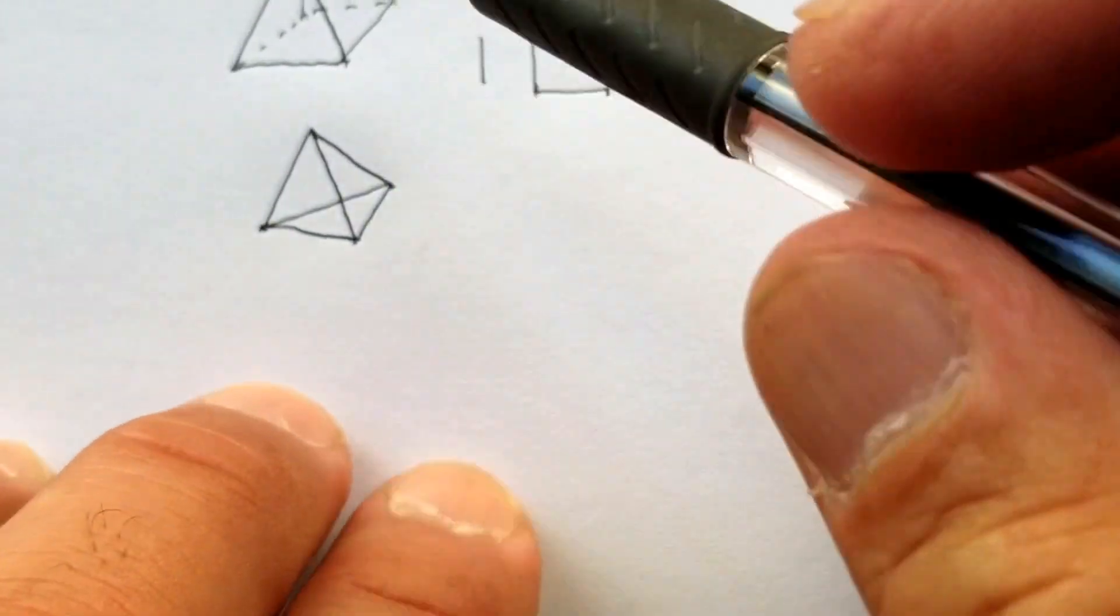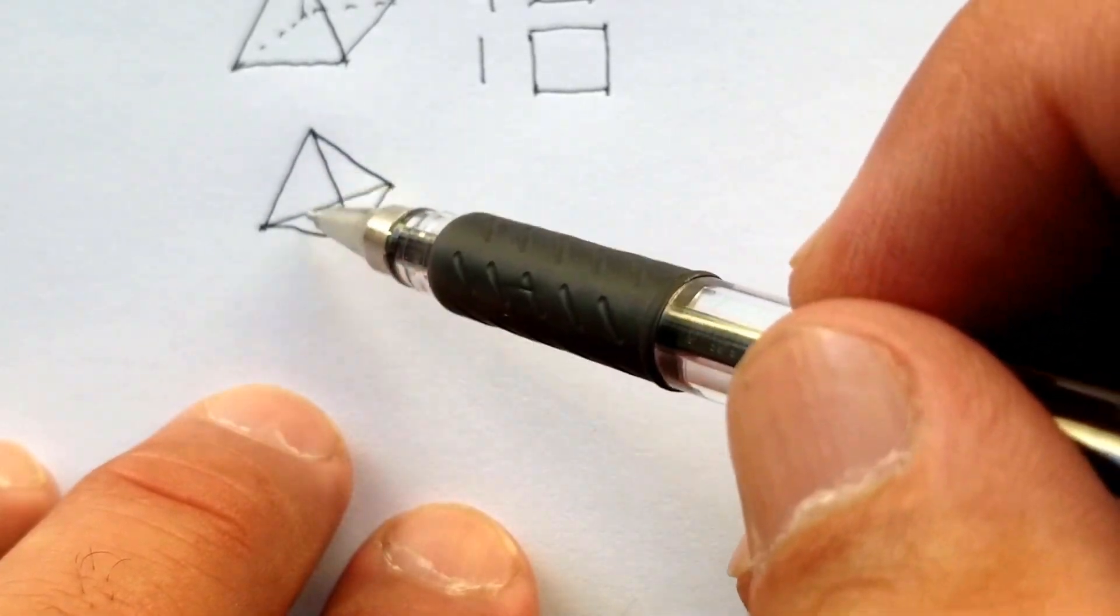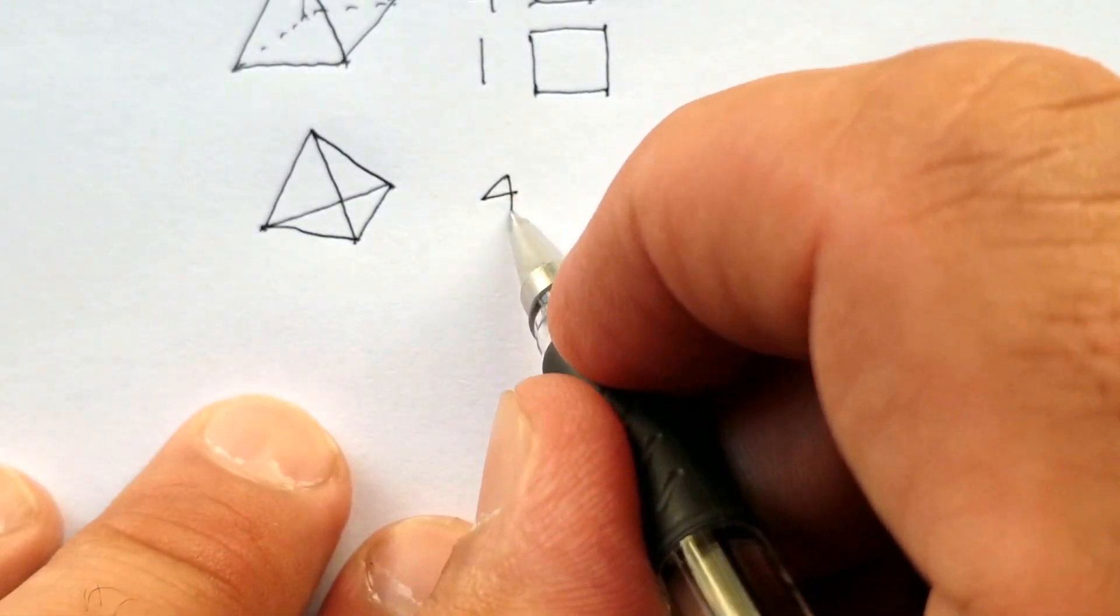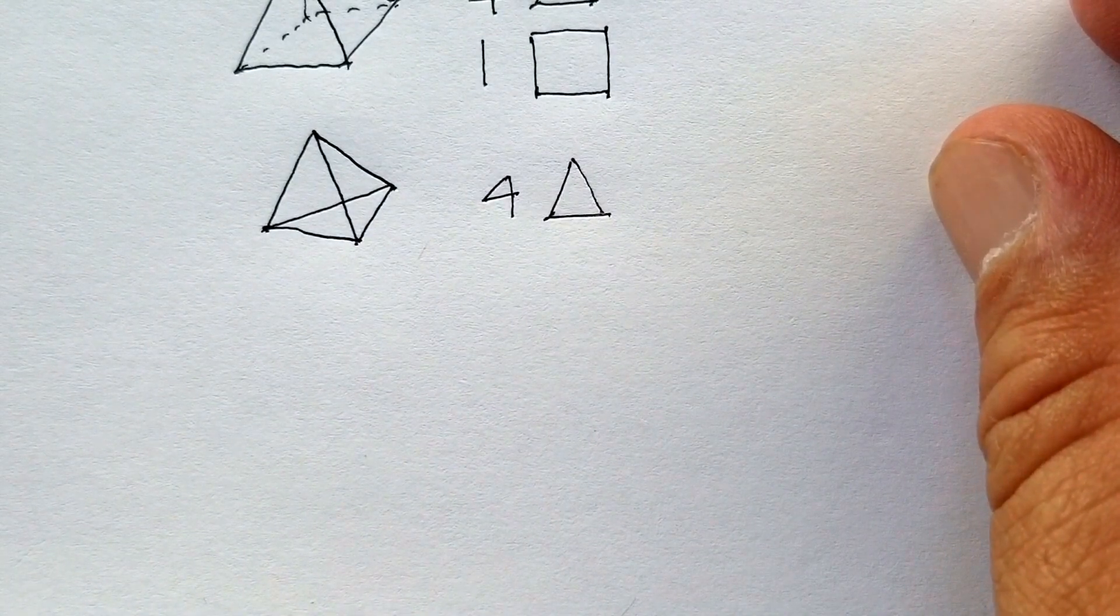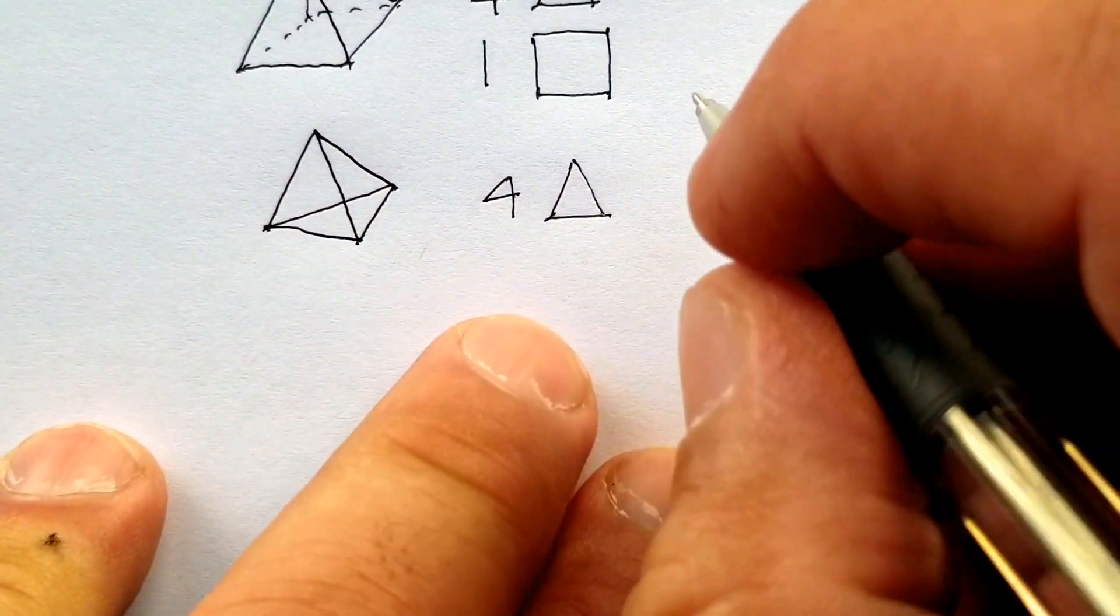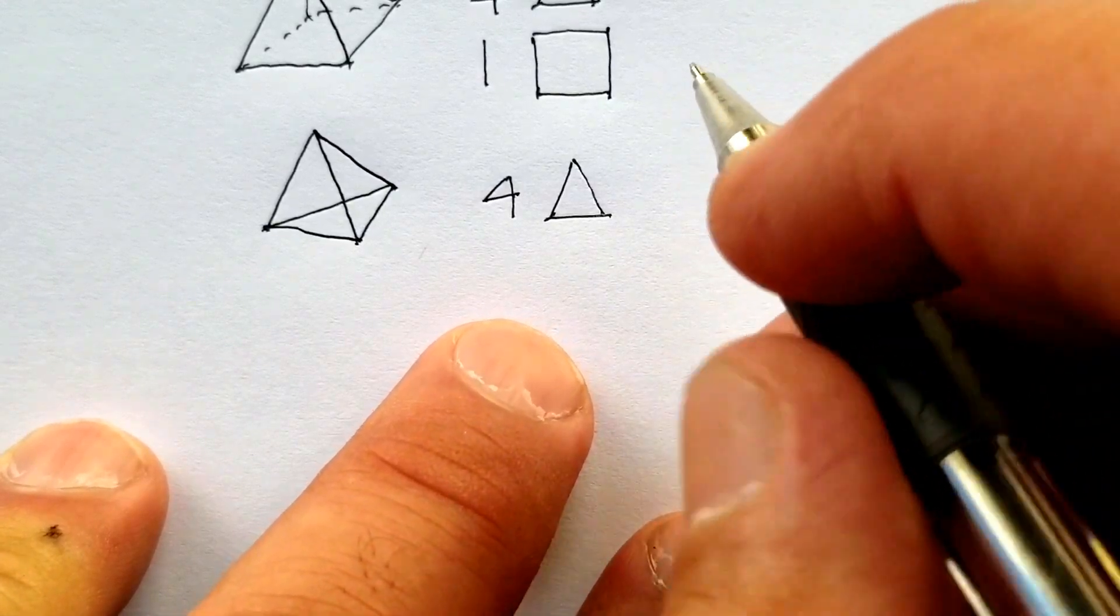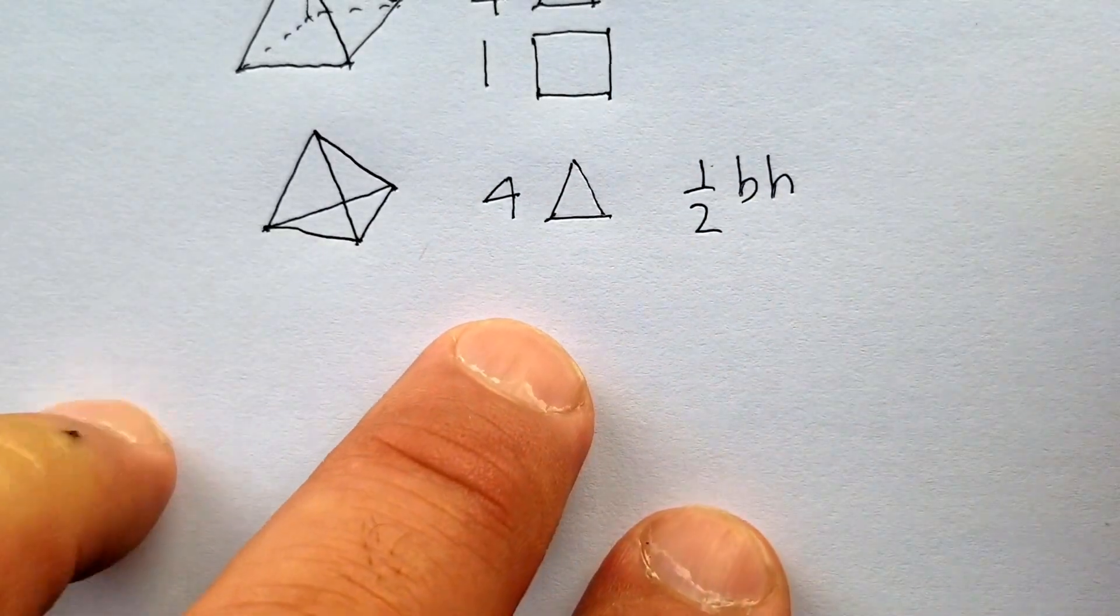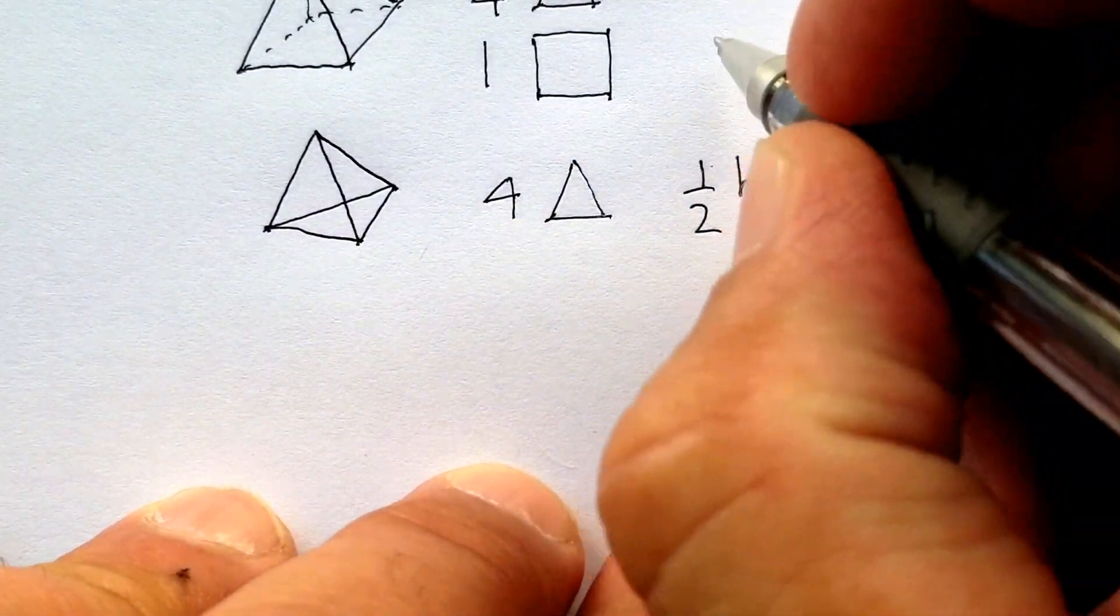This is a type of pyramidal shape where there are one, two, three, and then the bottom four. You have four triangular faces. Remember the formula to find the area of a triangle. For a right triangle, it's one-half base times height.